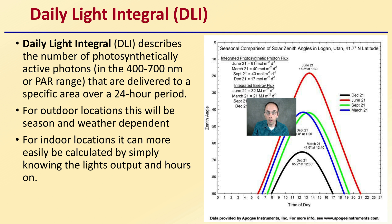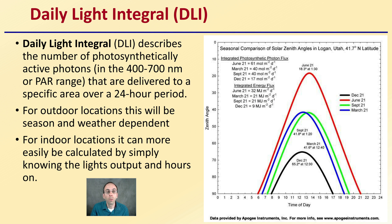What is the daily light integral, or DLI? It represents the total number of photosynthetically active photons in the 400 to 700 nanometer, or PAR range, that are delivered to a specific area over a 24-hour period. For outdoor locations, this will be season and weather dependent, and for indoor locations, it can more easily be calculated by simply knowing the light's output and the hours that the lights spend in the on position.